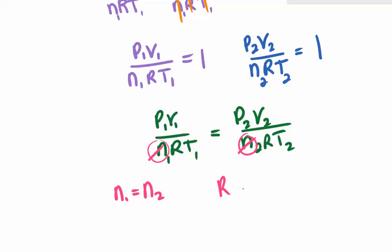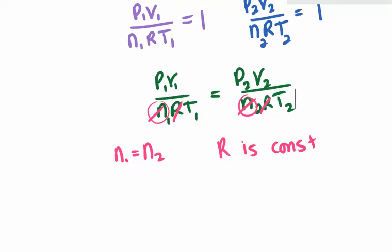Okay, and then we know R is a constant. So this R and this R also cancel. They're the same value. We could multiply both sides by that and those would cancel.